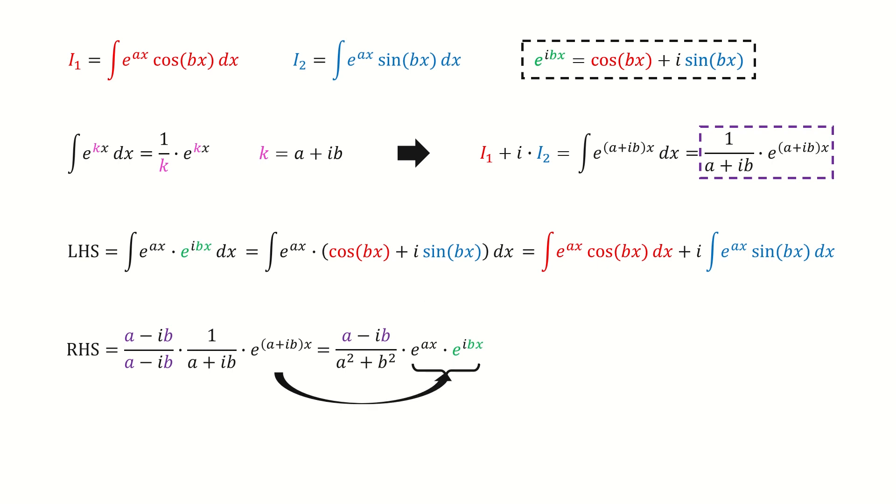And we write the exponential function into this way. Now we use Euler's formula again. After we replace this green term, we got here.